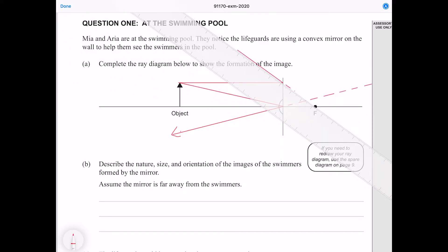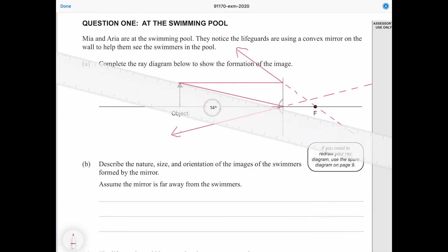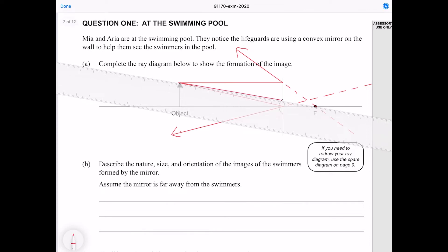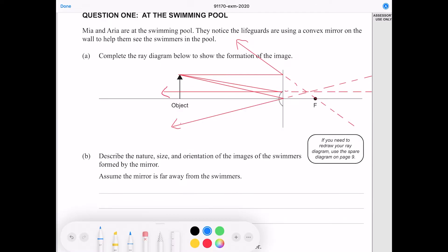Now lastly I'm going to draw a ray that goes towards the focal point, and then when it hits the mirror it is going to reflect parallel to the principal axis, and I'll back trace this one as well. And now as we can see we have our image right here.